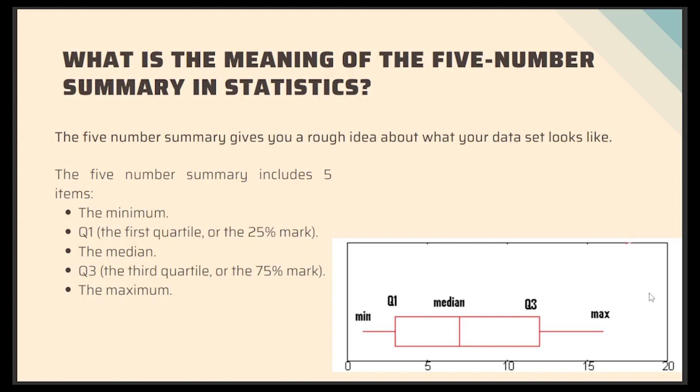The first is the minimum value, then the Q1 which is also called as the first quartile or the 25% mark, then the median, then the third quartile or the 75% mark and the maximum.